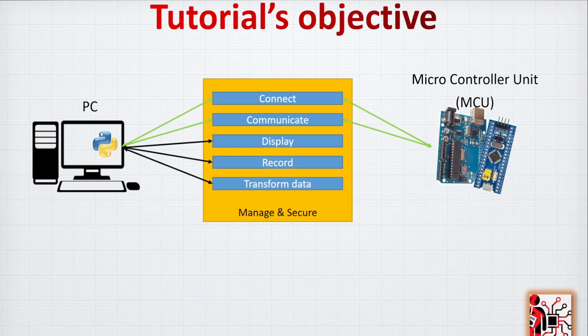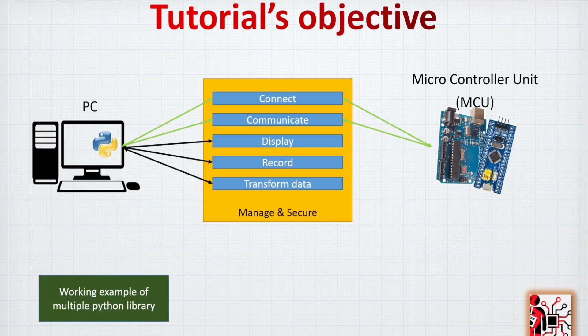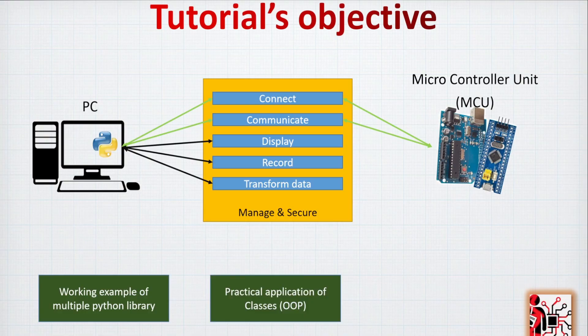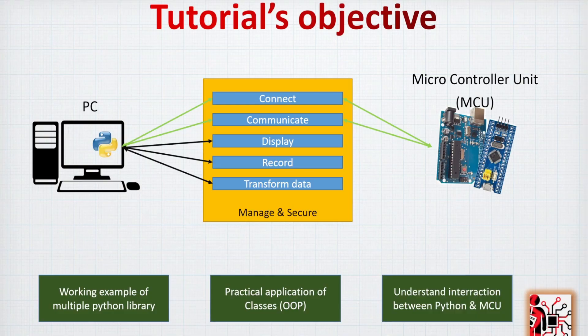Most importantly, we need to manage all these steps together and secure each one of them, so the program can be consistent and handle issues or bugs internally without interrupting the program's operation. You will have a working example using multiple Python libraries, and we will be using classes and object-oriented programming. You will have a practical application, and you will understand the interaction between Python and an MCU — including some complications that must be accounted for to ensure proper communication.